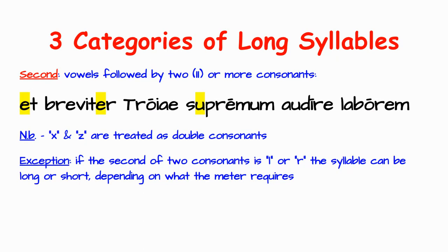As syllables in poetry, even if the vowel itself is short, there are other syllables that are going to be long. If you have a vowel followed by two consonants — and notice the two consonants don't even have to be in the same word — look at the first syllable here: 'et breviter.' The E is followed by actually three consonants: T, B, R. So that's going to be long. Or the E in 'breviter' at the end is followed by R then T — again, not part of the same word, but followed by two consonants. We have a number of those in this same line.